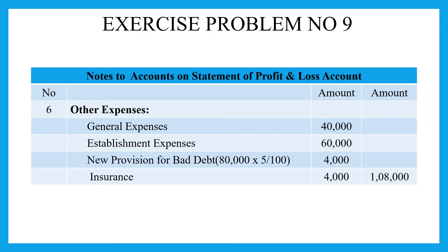The final subheading in profit and loss account is other expenses. General expenses are Rs. 40,000, establishment expenses Rs. 60,000. New provision for bad debts: sundry debtors are Rs. 80,000 at 5%, giving Rs. 4,000. Insurance is Rs. 4,000. This gives a total of Rs. 1,08,000 as other expenses.